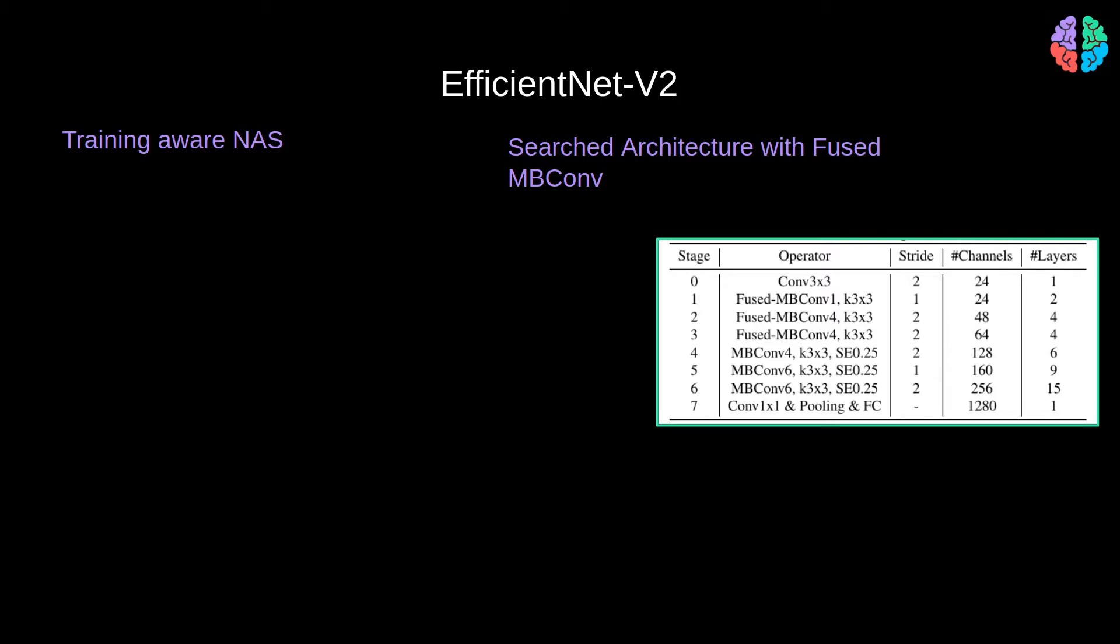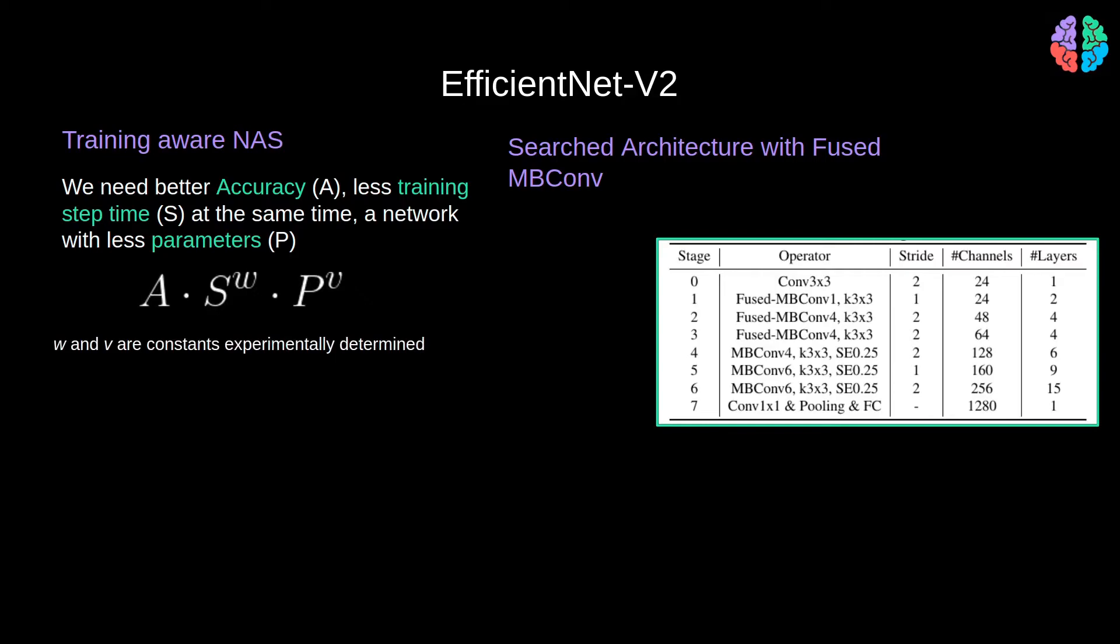The first contribution of version 2 is that they have introduced a training-aware architecture search. What we really want is of course better accuracy that trains in less time and results in a network with less parameters. If we were to express it mathematically, we need to optimize the product of these three metrics, A, S and P.